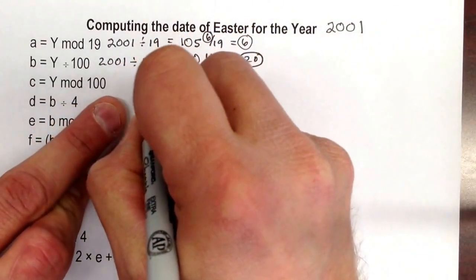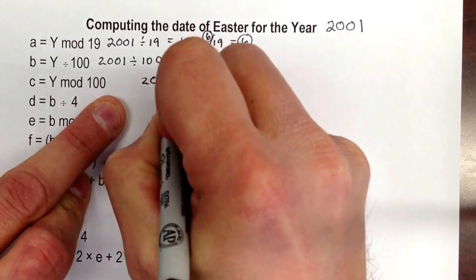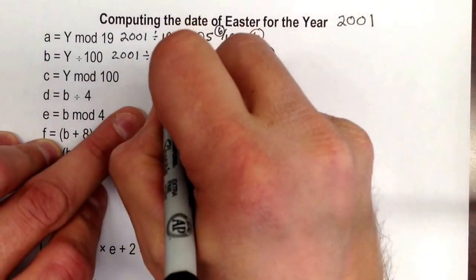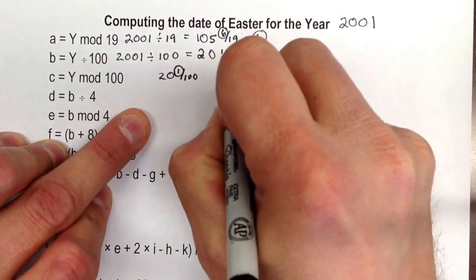For this one we do the same thing, but this time 20 and a hundredth we want mod. Mod means remainder. So 1 is c.